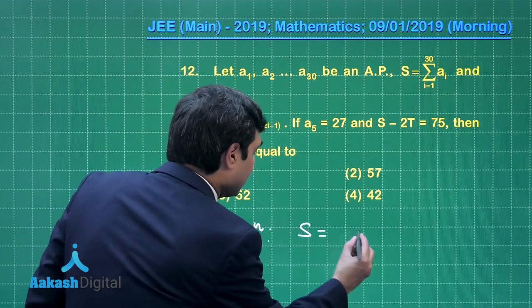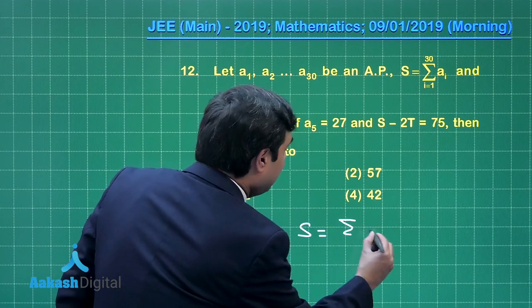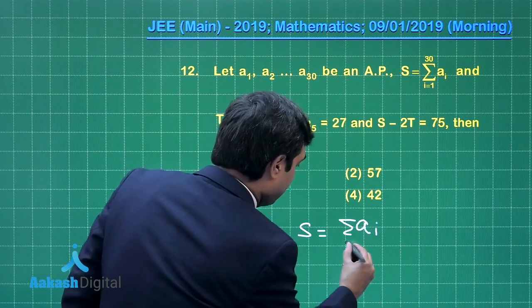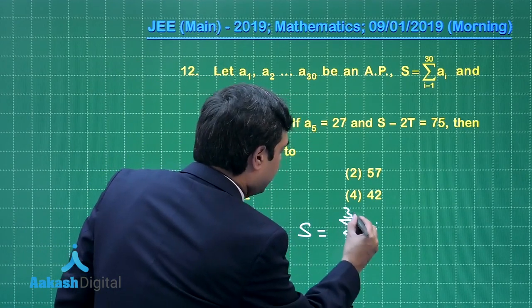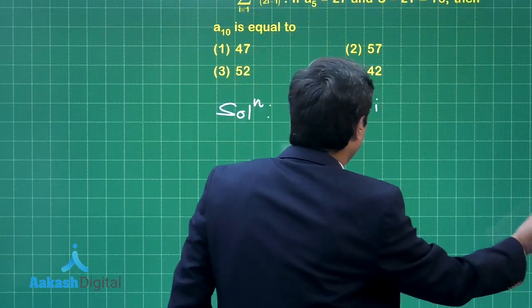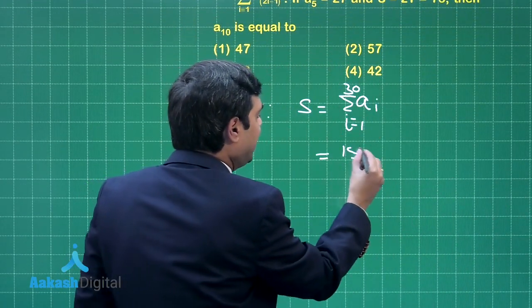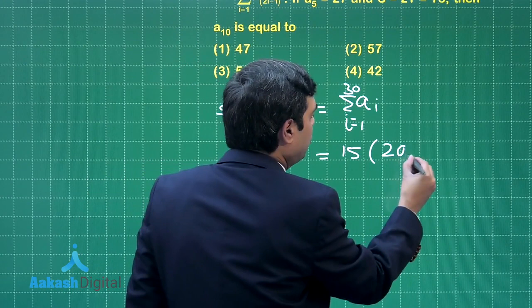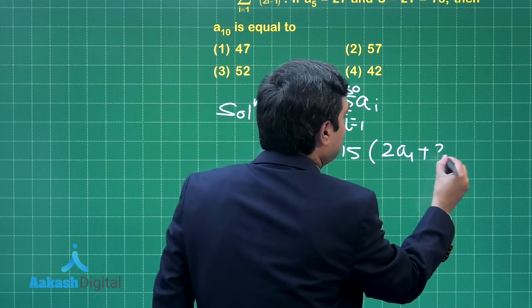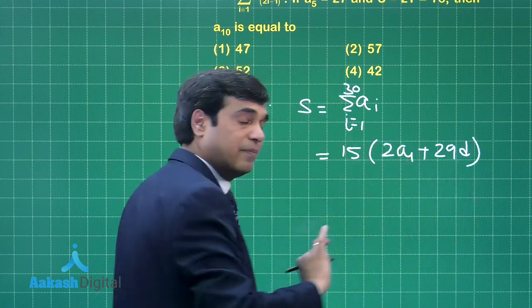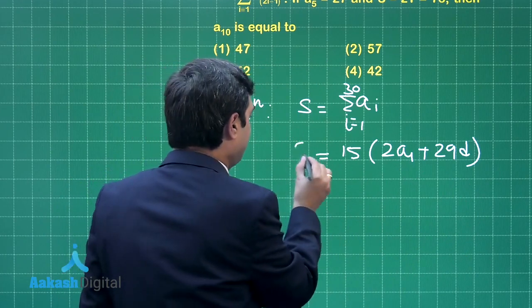We have S = Σaᵢ, i=1 to 30. So sum of 30 terms, this is simply 15 multiplied with 2a₁ + 29d. This is clear - say this is equation number 1.